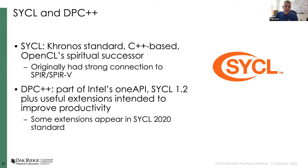The last programming model I want to cover is SYCL and DPC++. SYCL, like OpenCL, is a Khronos standard. It's C++-based, reflecting the community's shift toward C++. Originally it had a strong connection to SPIR and now SPIR-V as an intermediate language. DPC++ is essentially SYCL version 1.2 with added extensions designed to improve productivity and ease of use — some of those extensions have been included in the SYCL 2020 standard.